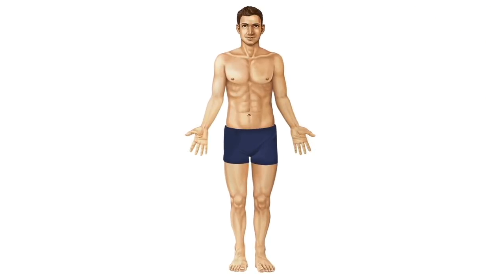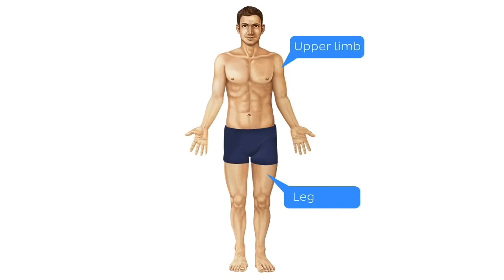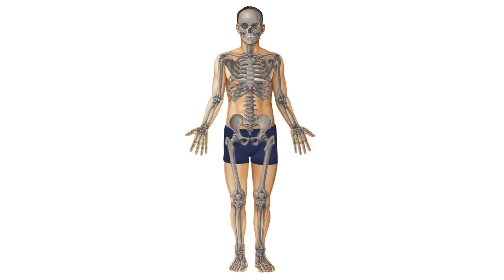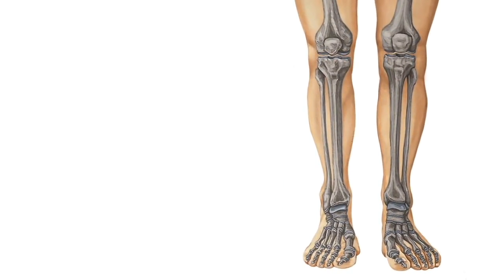Before we begin, I just want to clear up an issue that often arises when transitioning from everyday terms to anatomical terms. So as a kid, your arm is your arm and your leg is your leg, but not in anatomy. Instead, your arm or upper limb is divided into the arm and forearm, and your leg or lower limb is divided into the thigh and leg.